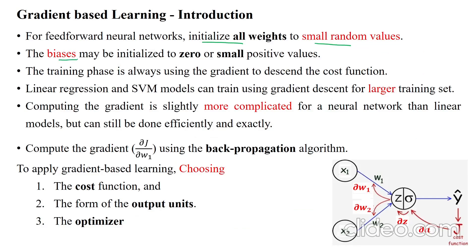The biases may be initialized to zero or small positive values. Weight parameters are initialized with small random values and the biases may be initialized with small positive random values or zeros.